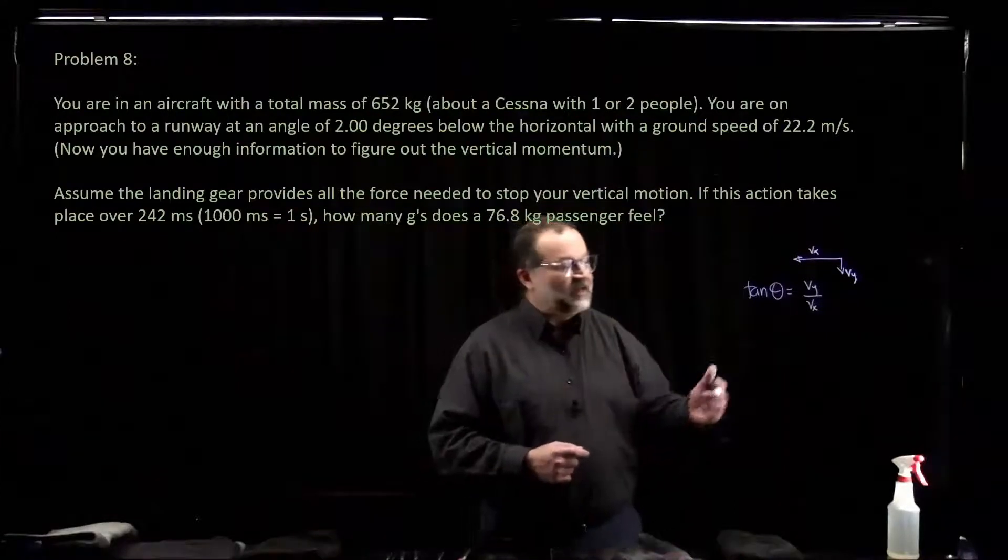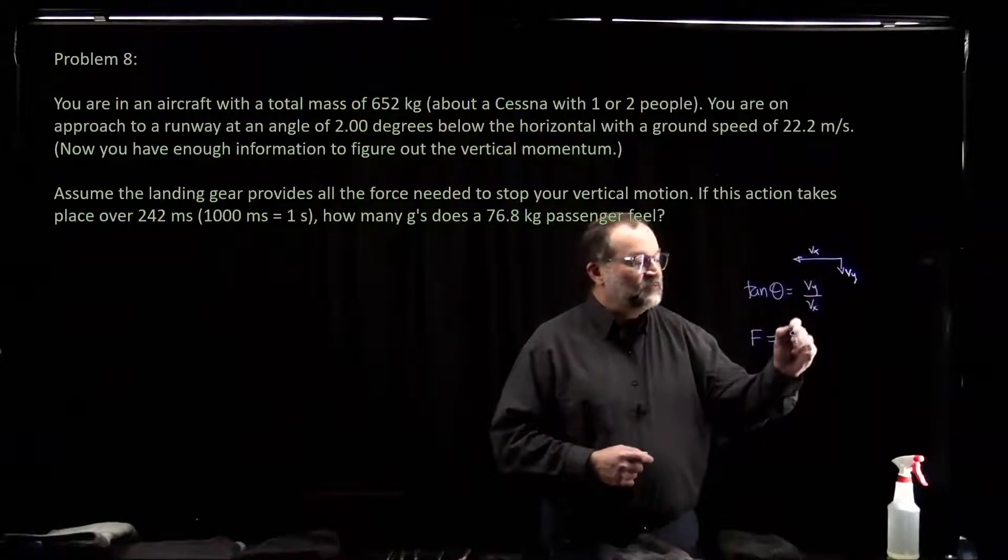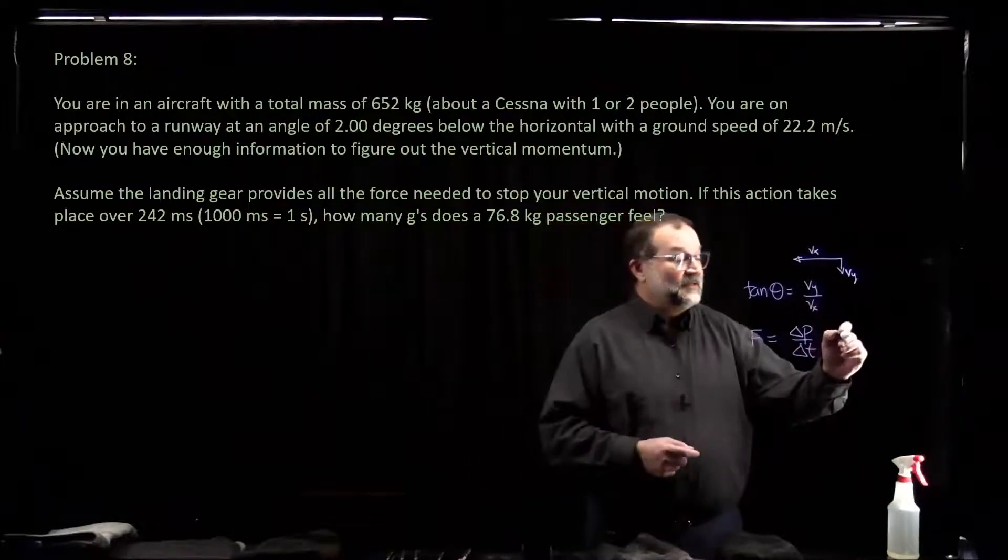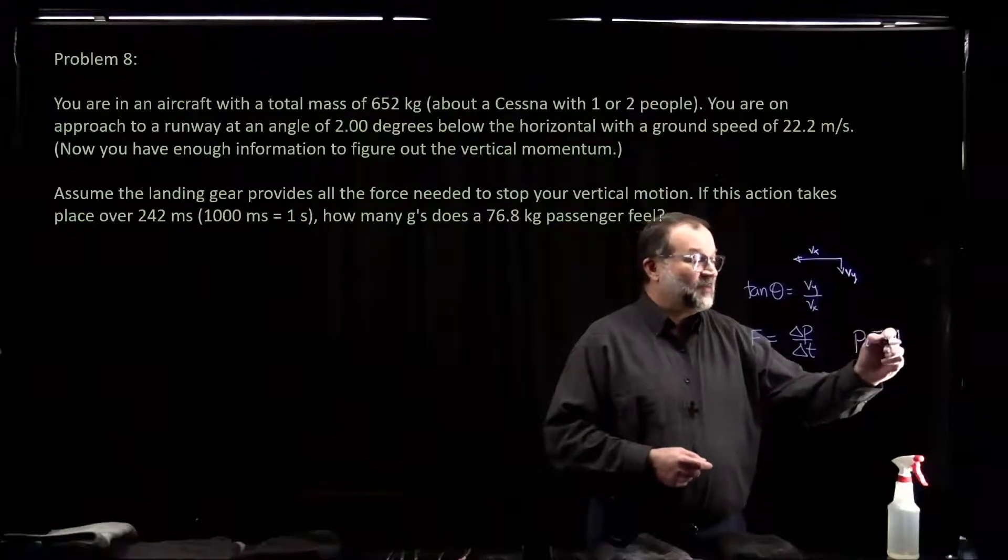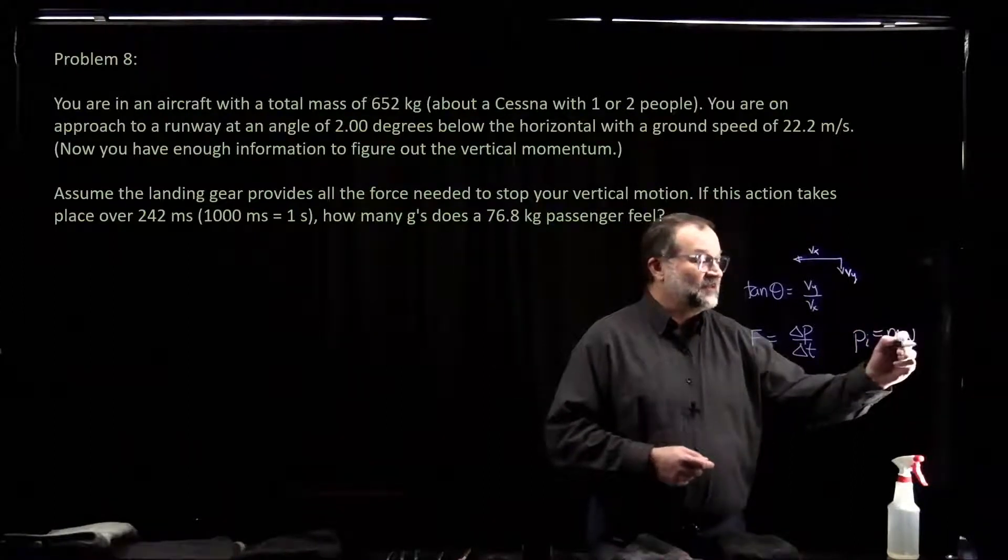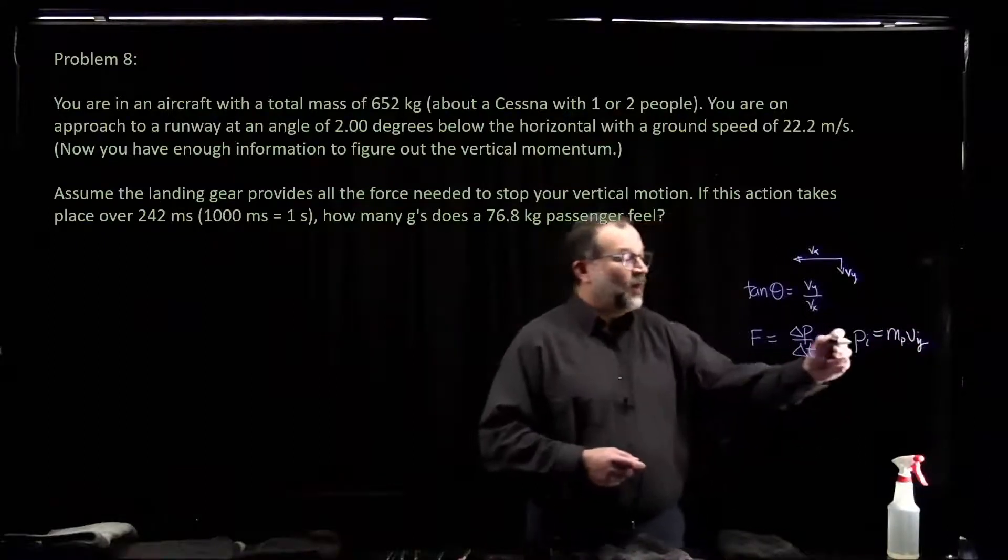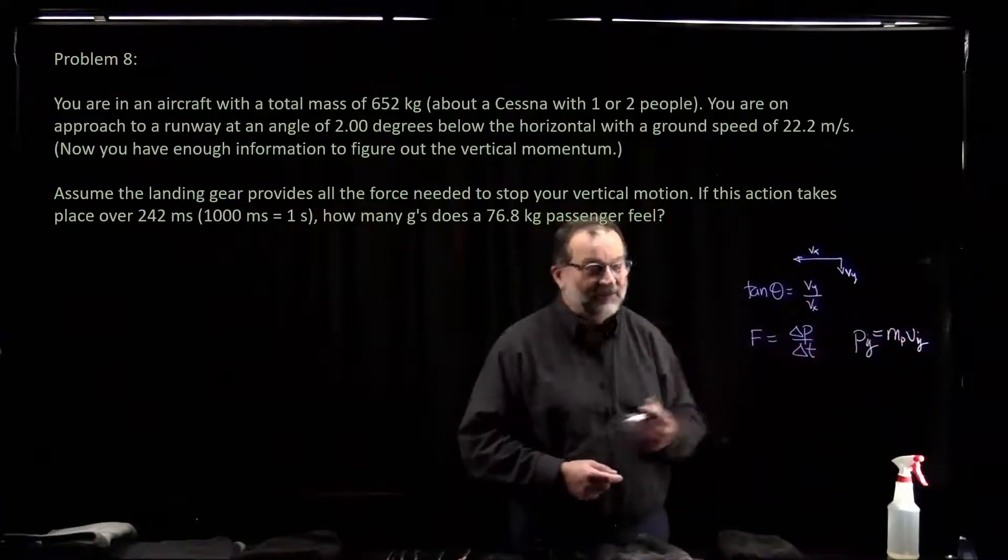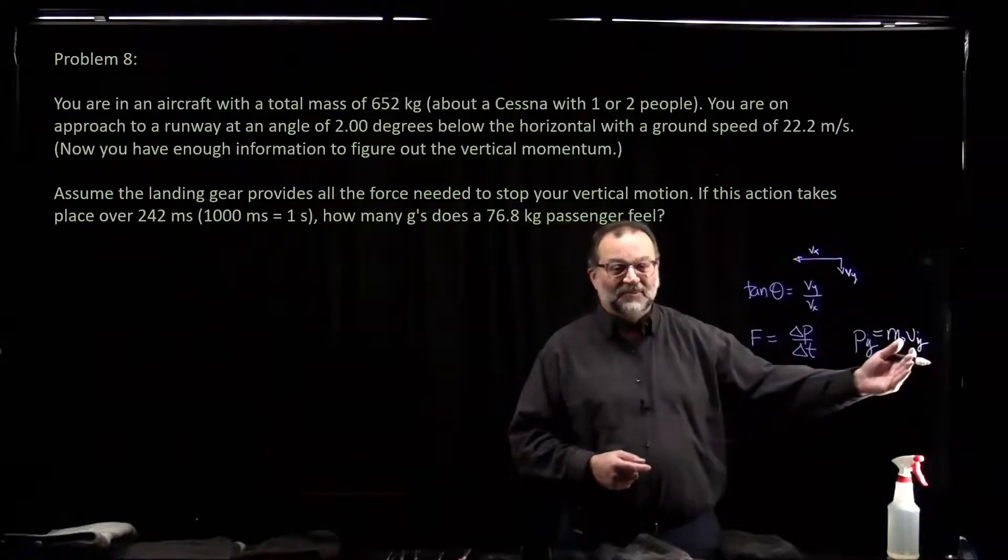And we need to get the force on the passenger as delta p over delta t for the passenger, which is delta p, or py for the passenger, is the mass of the passenger times the velocity, your vy. This is our py. Py is mass of the passenger times the velocity in y. So we know what we're dealing with in terms of the passenger's momentum.